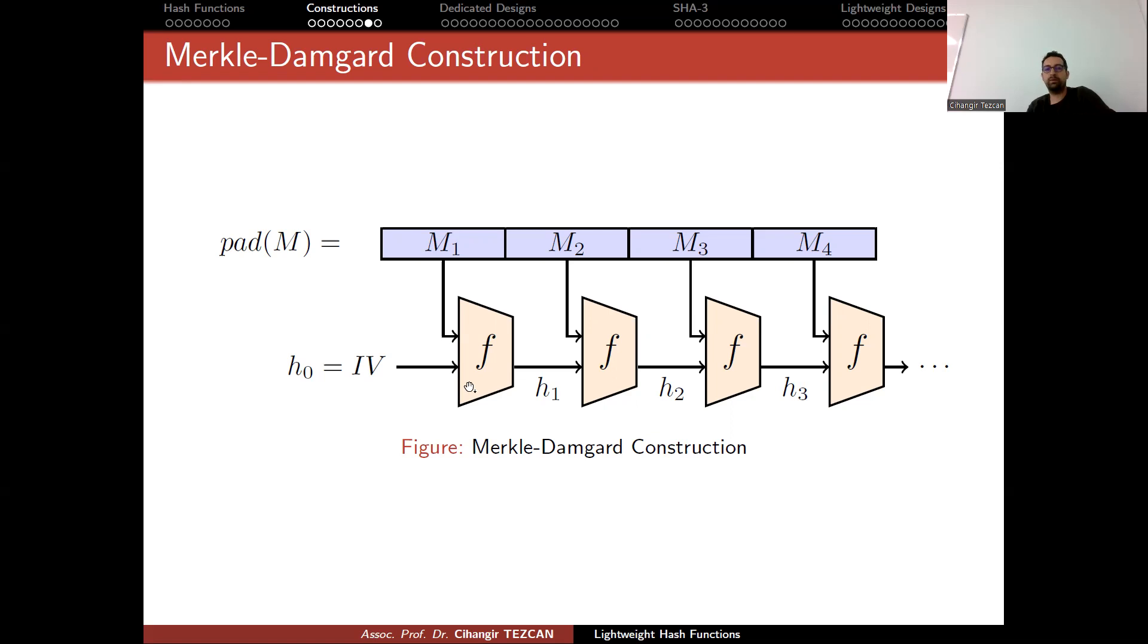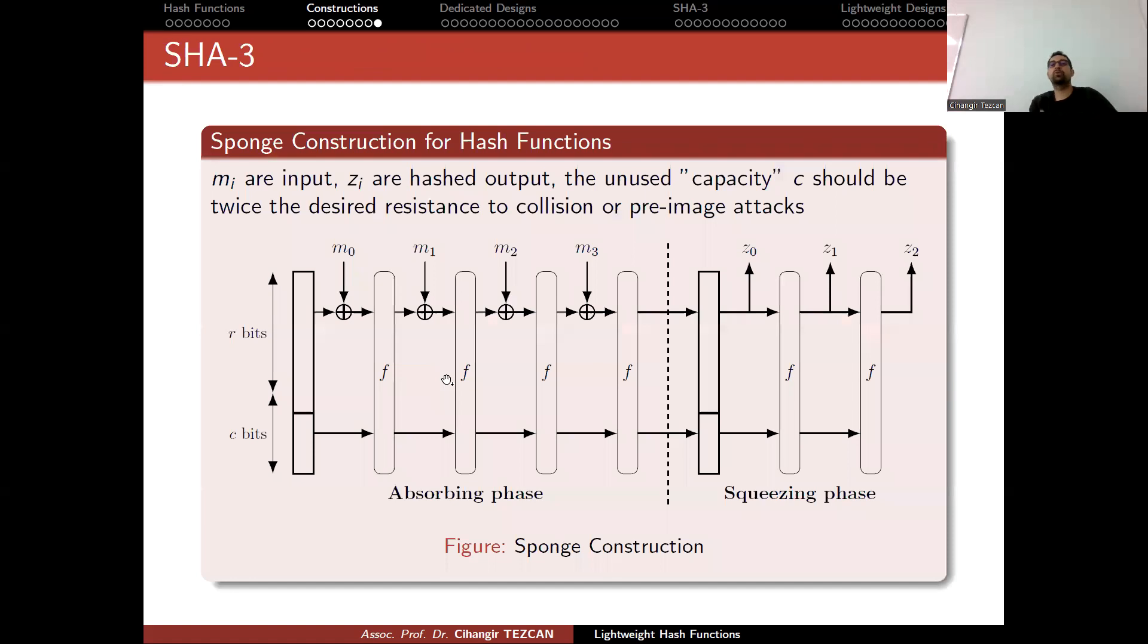But before talking about Merkle-Damgard construction, SHA-3 is a sponge construction. And many lightweight NIST competition algorithms support hashing. And there are also most of them are sponge constructions. So we have to see what the sponge function is and how can I have a hash function from a sponge function.